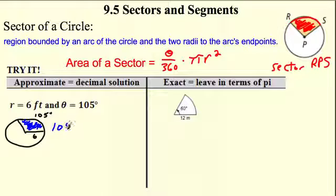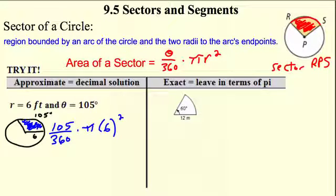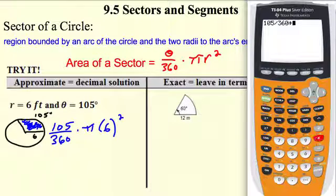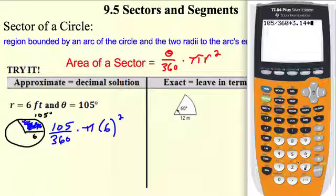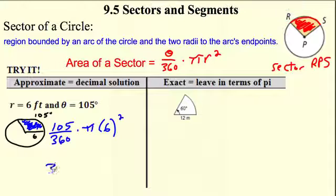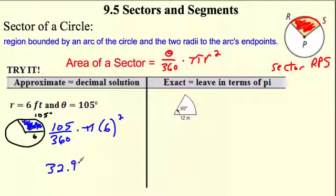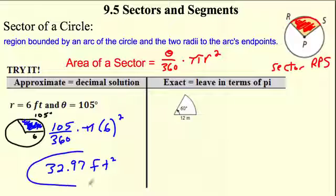I'm looking at 105 degrees out of a total 360 degrees, times pi r squared. It says approximate, so I'm going straight to the calculator: 105 divided by 360, times 3.14, times 6 squared which is 36. That gives 32.97, so the area of this sector is 32.97 square feet. That's how much of the entire circle it is — 105 out of 360, just part of the circle.